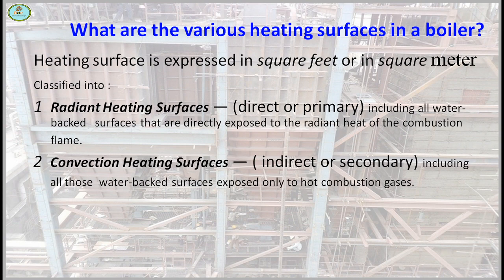The second one is convection heating surface — indirect. It includes all those water-bed surfaces exposed only to the combustion gases, not directly to the flame.